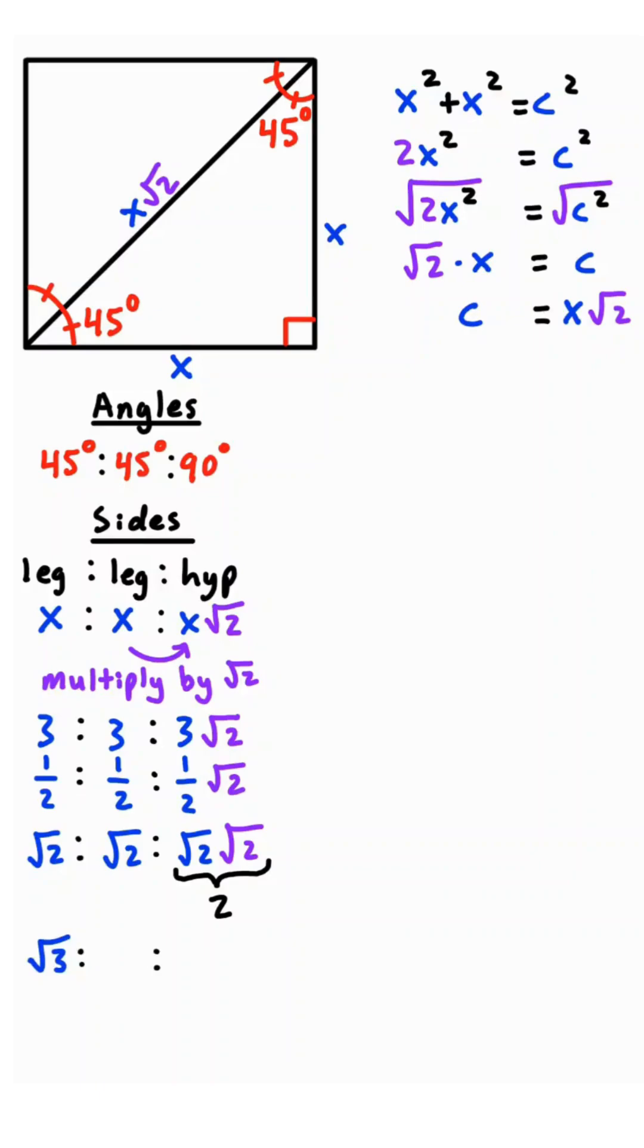And if the leg is root 3, the other leg is root 3, the hypotenuse is square root 3 times root 2, which is square root of 6.